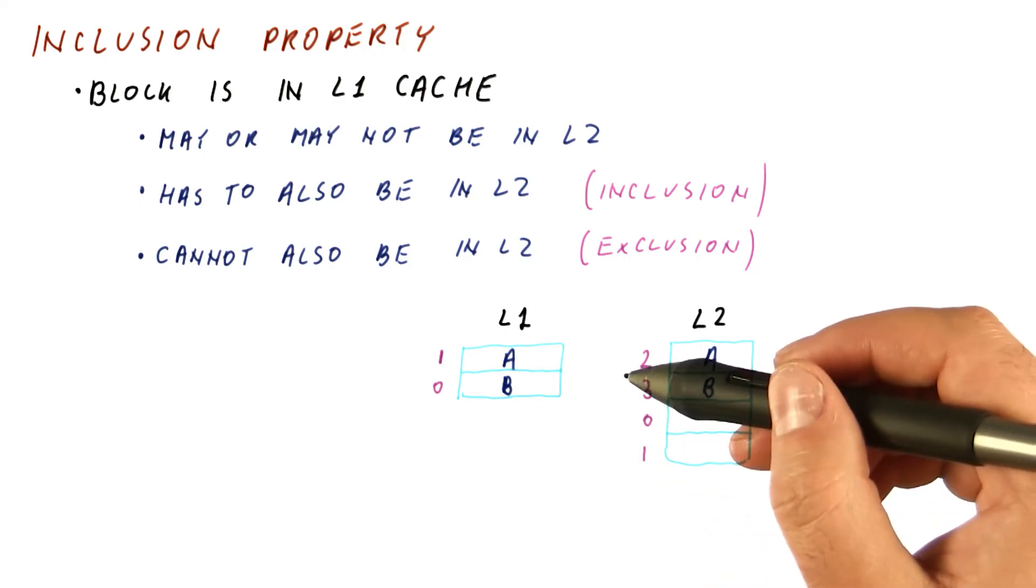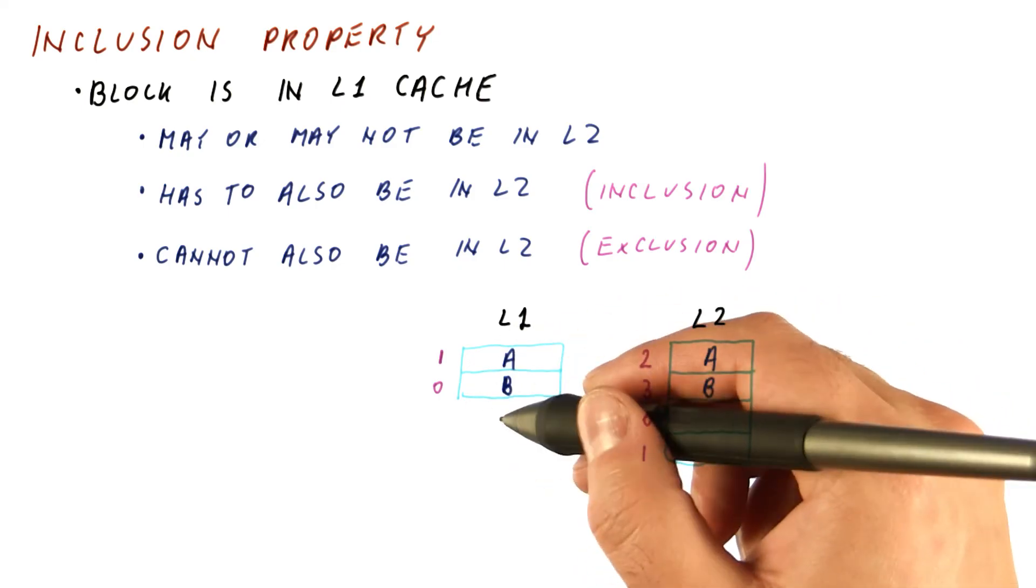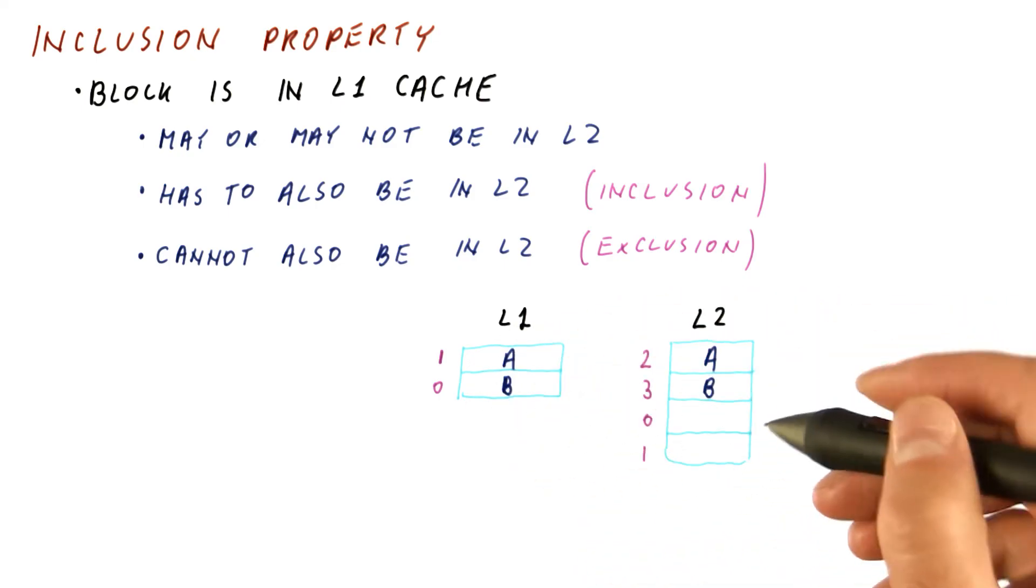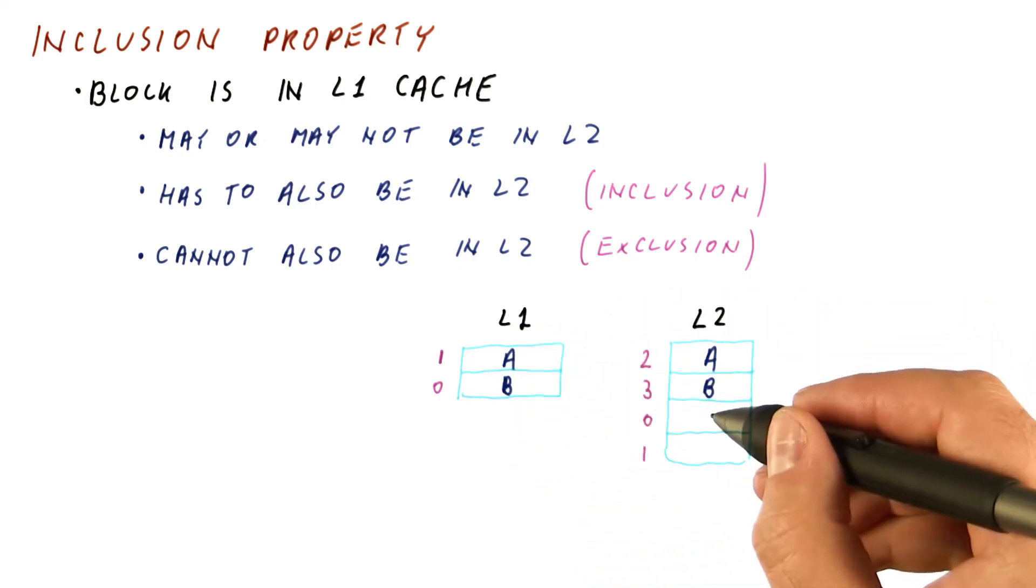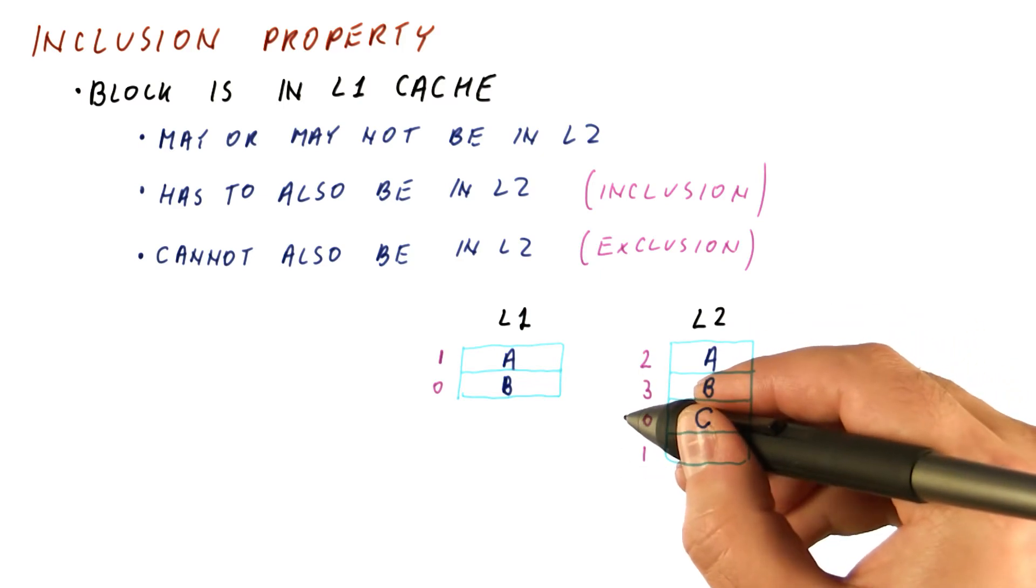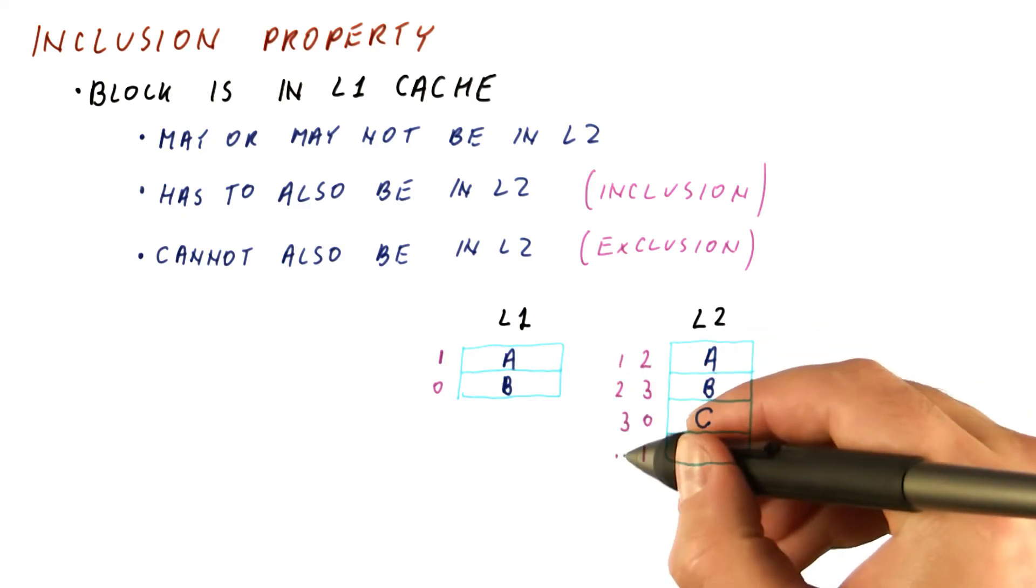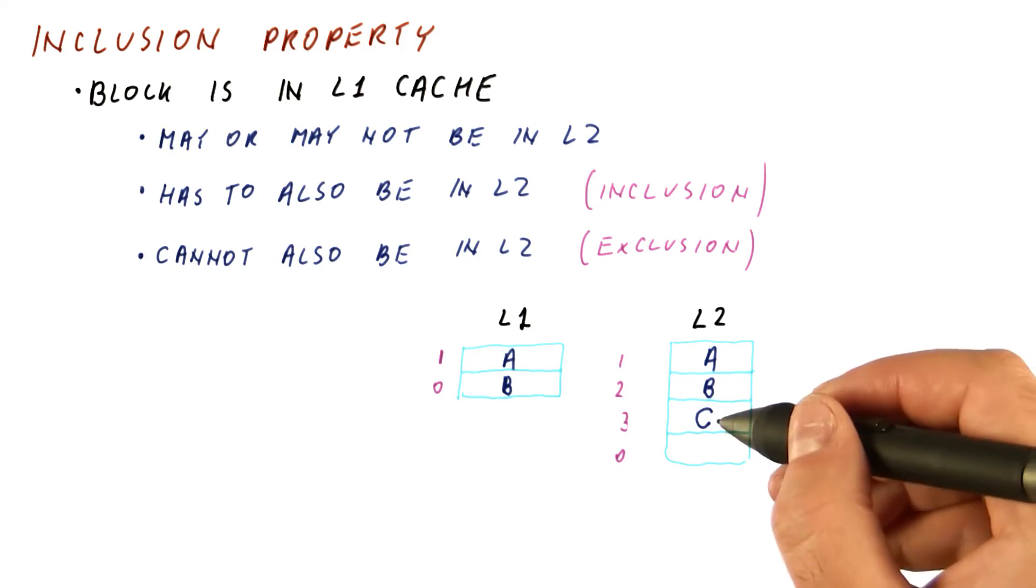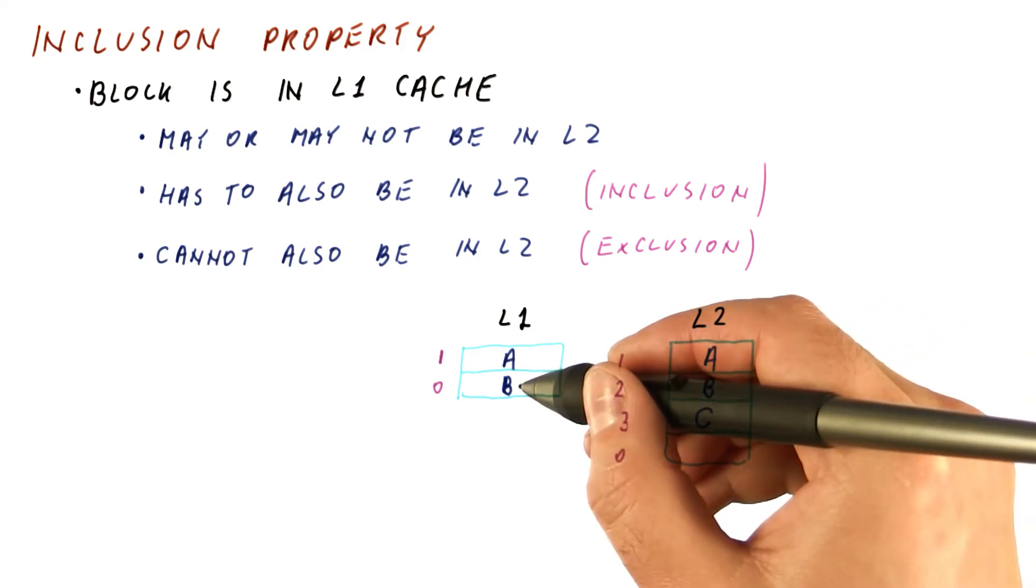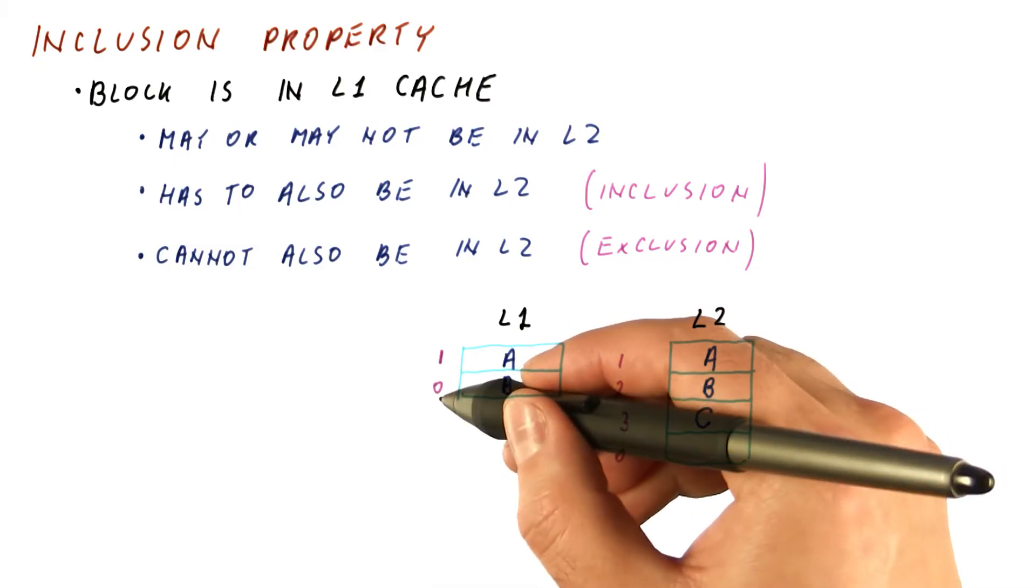Now let's say we access C. What's going to happen is we have a miss in the L1 cache, we have a miss in the L2 cache. We bring in C and replace the least recently used block, which is this. The counters now get updated to be three, two, one, and zero. And then C is brought into this level one cache and replaces B because that's the least recently used block. And the counters become one and zero here.